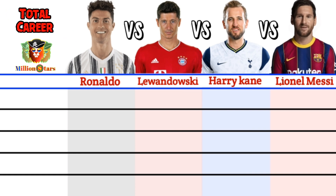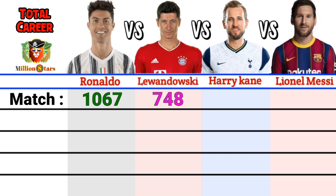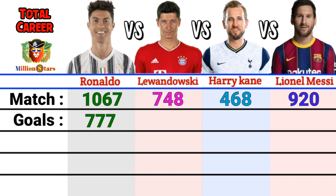Total career comparison. Matches: Ronaldo 1067, Lewandowski 748, Harry Kane 468, Lionel Messi 920. Goals: Ronaldo 777, Lewandowski 525, Harry Kane 282, Lionel Messi 743.